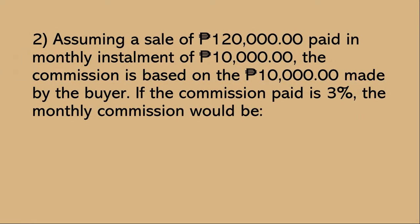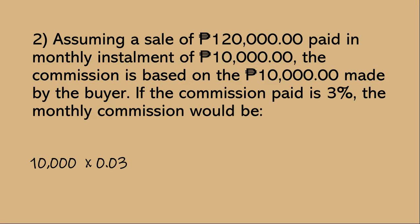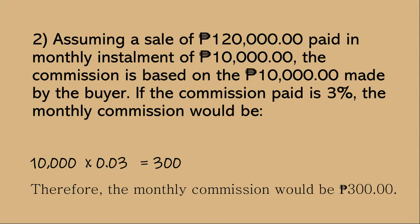Another example: assuming a sale of 120,000 pesos paid in monthly installments of 10,000 pesos, the commission is based on the 10,000 pesos made by the buyer. If the commission paid is 3%, the monthly commission would be calculated by multiplying 10,000 by 3% — which is 0.03 in decimal form — giving us 300. Therefore, the monthly commission would be 300 pesos.